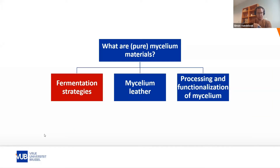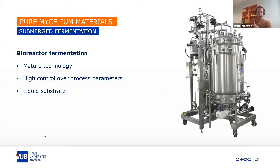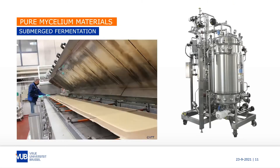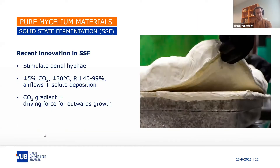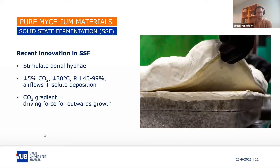Filamentous fungi used for biotechnological applications have been grown in bioreactor fermentation setups for several decades already — this is a mature technology which allows a high degree of control over process parameters and uses liquid substrate to grow the organism. Researchers at VTT are able to have a continuous production of mycelium tissue using bioreactor fermentation. Recent innovations in solid state fermentation have also shown new phenotypes of pure mycelium foam that grows out of the substrate at specific conditions.